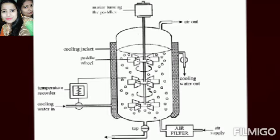Operation is determined by the sensitivity of the process. Two types of materials — steel and glass — are used for fermentation.